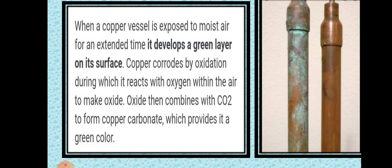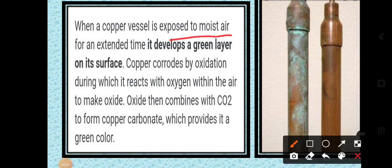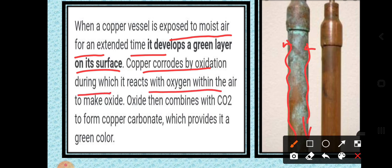Now let us take another example — copper. Copper also readily reacts with oxygen. When a copper vessel is exposed to moist air for an extended period of time — meaning for long days — it develops a green layer on its surface. The copper corrodes by oxidation, reacting with the oxygen in air to make copper oxide, just as iron forms iron oxide.